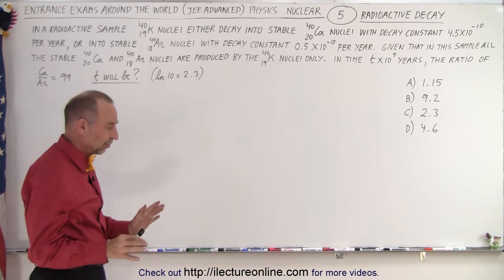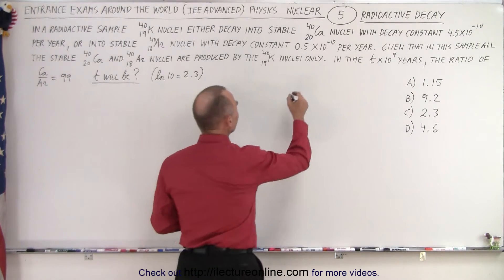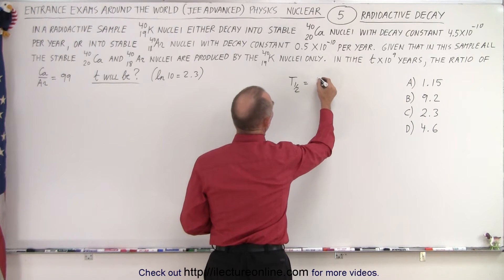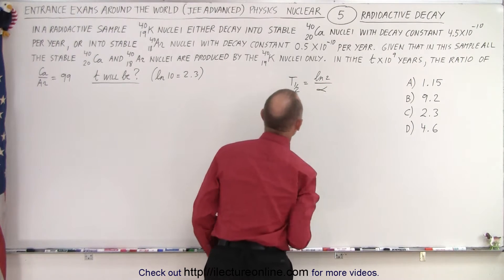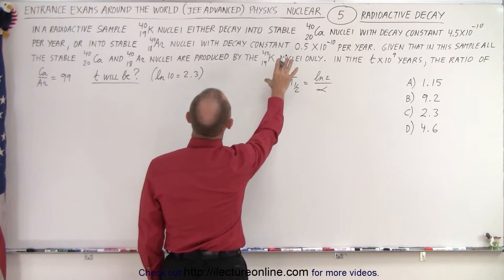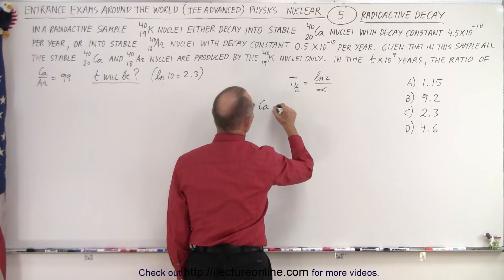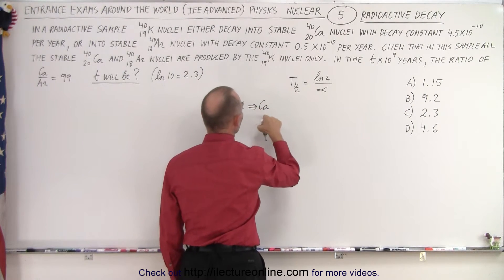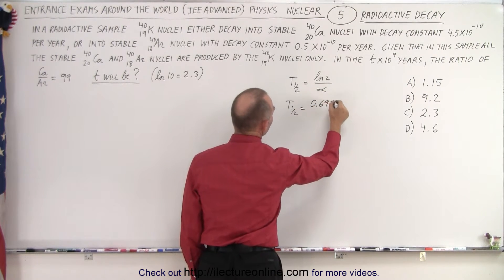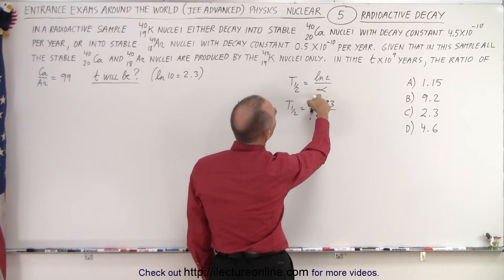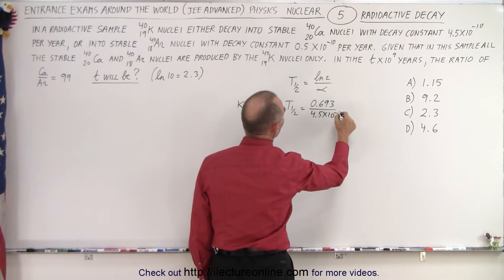So the first thing I would think about is this: let's compare not the decay constant but the half-life. And we know that the half-life, t₁/₂, is equal to the natural log of 2 divided by the decay constant. So in the case of calcium, going from potassium to calcium, the half-life will be equal to natural log of 2, which is 0.693, divided by the decay constant, so that would be 4.5 times 10 to the minus 10 per year.